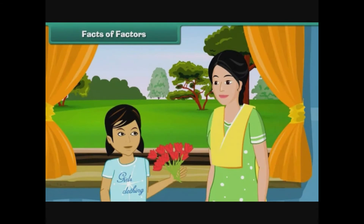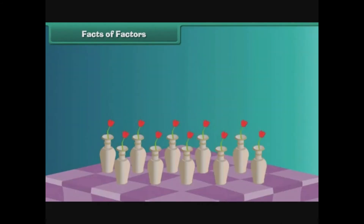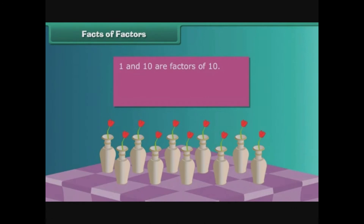Facts of factors. Prena gifts her mother a bunch of ten red roses on her birthday. Prena's mother arranges them all in a single flower vase, expressed as ten multiplied by one is equal to ten. She then places one rose each in ten vases, expressed as one multiplied by ten is equal to ten. One and ten are factors of ten. One is a factor of every number. Every number is a factor of itself.